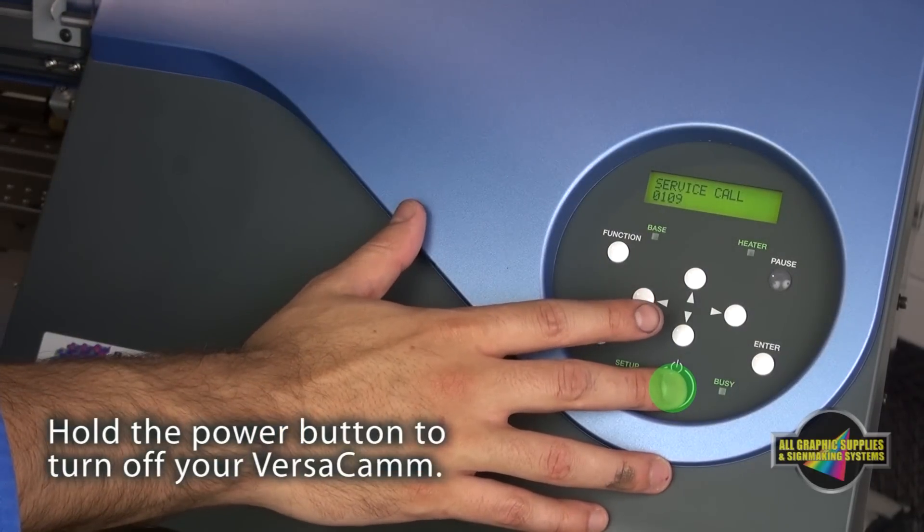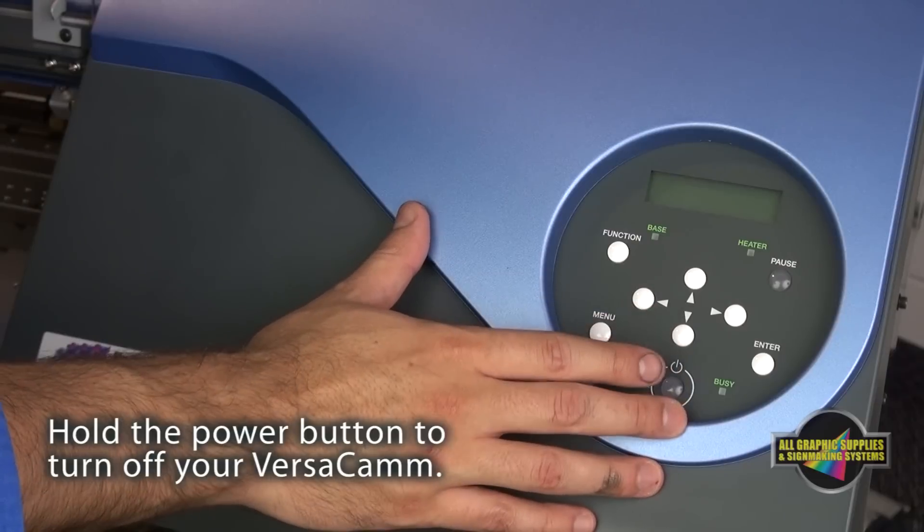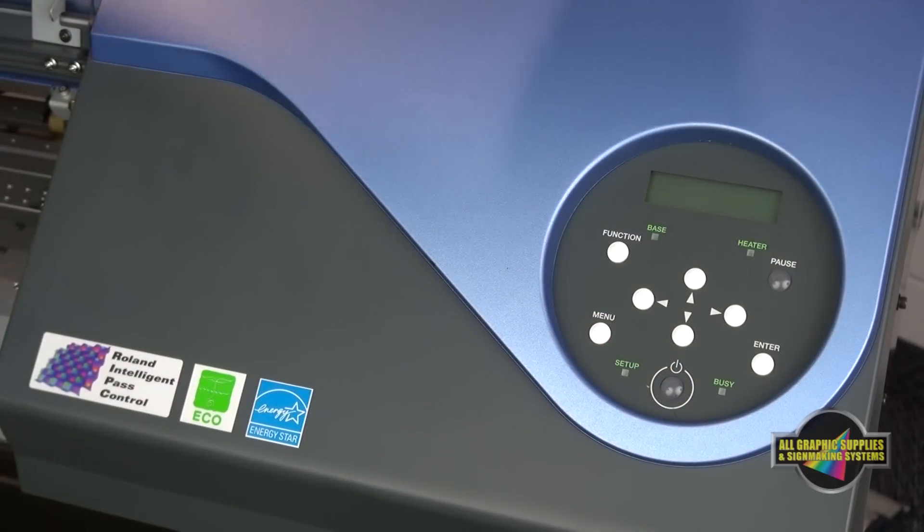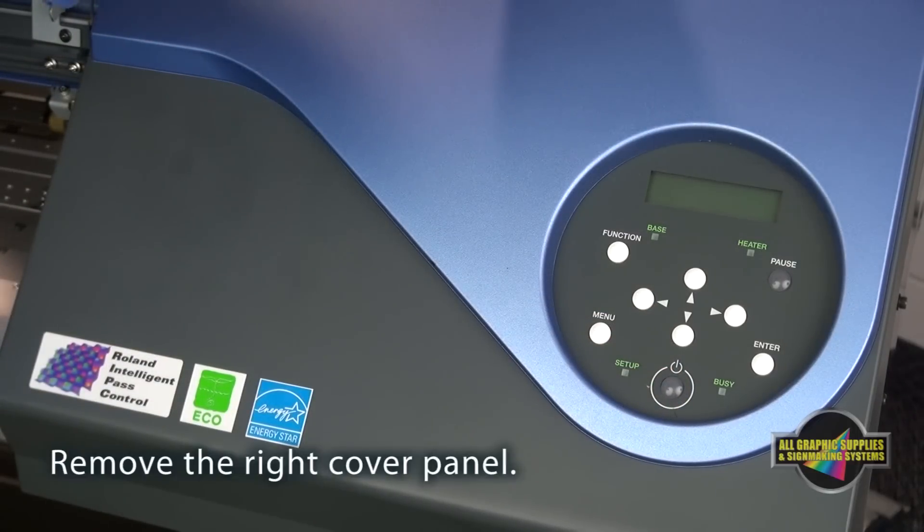Start by holding the power button to shut off the printer. Next, remove the panel on the right side of the printer.